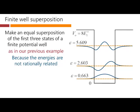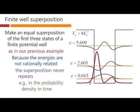And because these energies are not rationally related. And they could be quite irrational numbers here. Real numbers that are not necessarily rationally related to one another. The superposition in that case never repeats itself. For example, here is the probability density in time that we could calculate for a superposition like that. And it keeps wiggling about all over the place. And it never repeats itself.